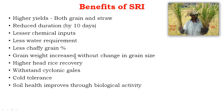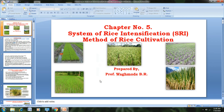Benefits of SRI method: higher yield of both grain and straw, reduced crop duration by 5 to 10 days over conventional, lesser chemical inputs, lesser water requirement, lesser choppy grain percentage, increased grain weight without change in grain size, higher head rice recovery, withstands cyclonic gales, cold tolerant, and soil health improves through biological activity. This concludes today's topic on the System of Rice Intensification method of rice cultivation. Thank you.